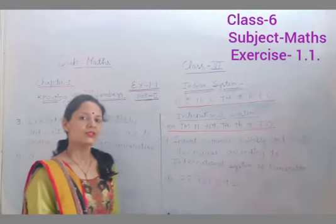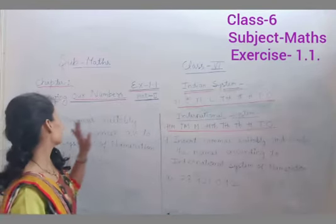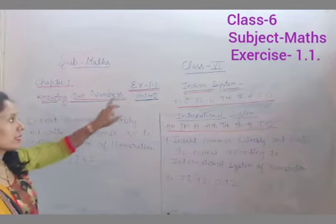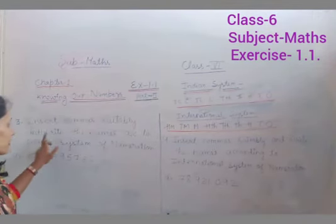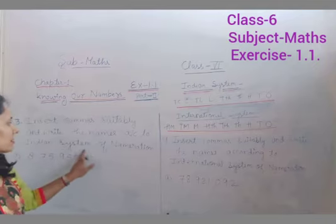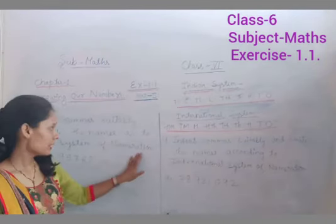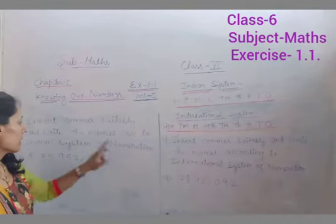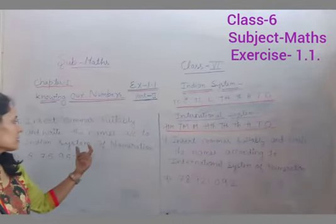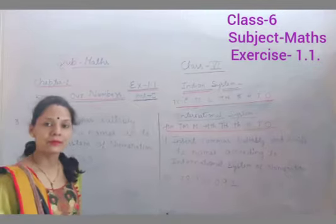Good morning to all. Today we are going to start question number 3, exercise 1.1. Insert commas suitably and write the names according to Indian system of numeration. Hame kya karna hai? Commas insert karna hai. Aur in numbers ko, hume Indian system ke according wordings mein likhna hai.